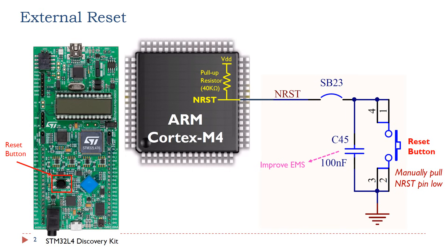This bypass capacitor is to improve the level of electromagnetic susceptibility. Electromagnetic susceptibility of a device is defined as the ability to operate without fault under electrical disturbances and noise. In other words, EMS is the level of tolerance to various forms of electromagnetic radiation. The bypass capacitor can remove high-frequency voltage signals from the NRST pin, and thus reduce the transient circuit demand on the power supply unit.